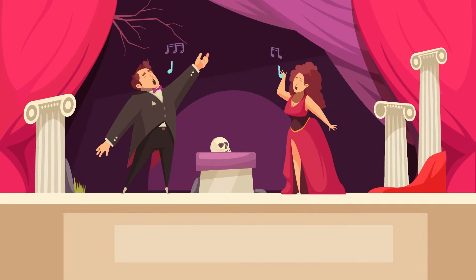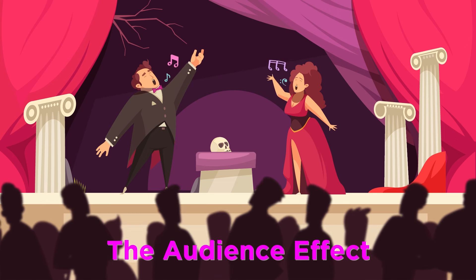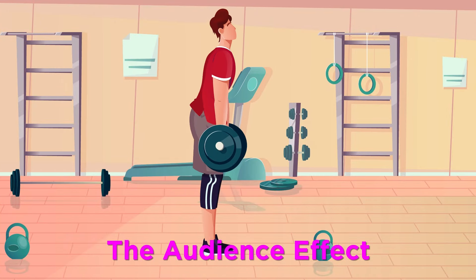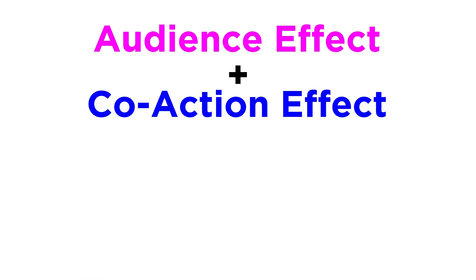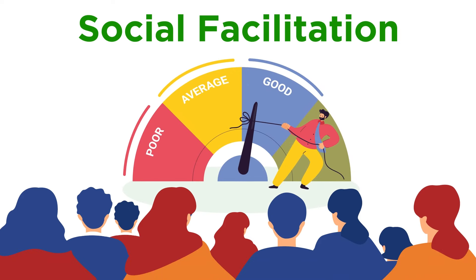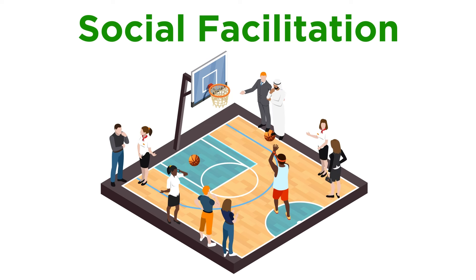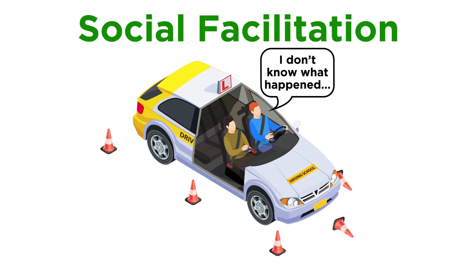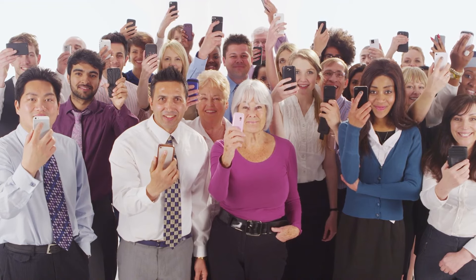Social facilitation can also occur when you do something in front of an audience. This is called the audience effect. For example, musicians may perform better in front of an audience than by themselves, and weightlifters could lift heavier weights in front of others than when alone. The co-action effect and the audience effect are both types of social facilitation, where being around people improves performance. However, sometimes the presence of others impairs performance. Perhaps you can easily make basketball free throws when practicing by yourself, but when others watch you, you suddenly miss every shot. Or you were more prone to making errors during a driving test than when driving by yourself.